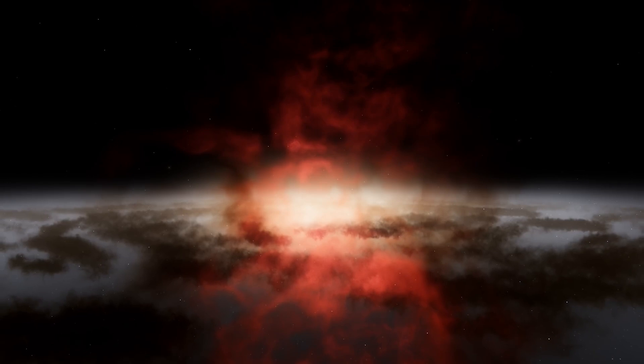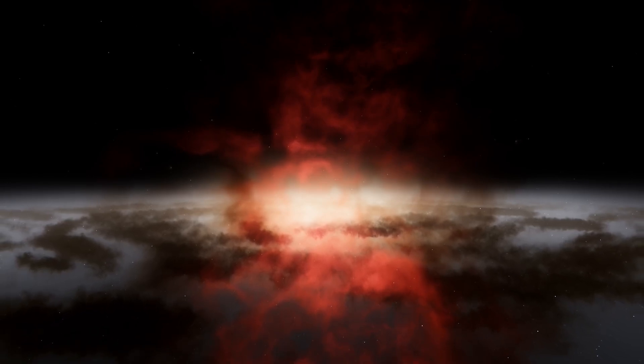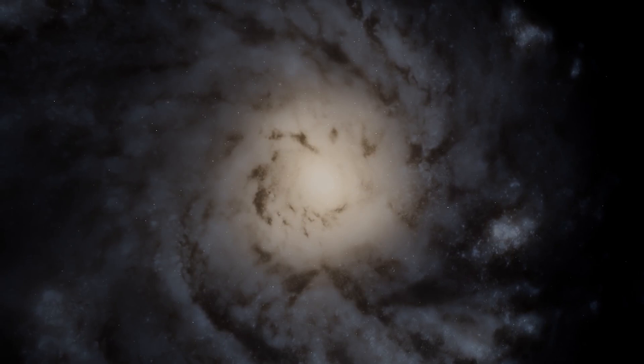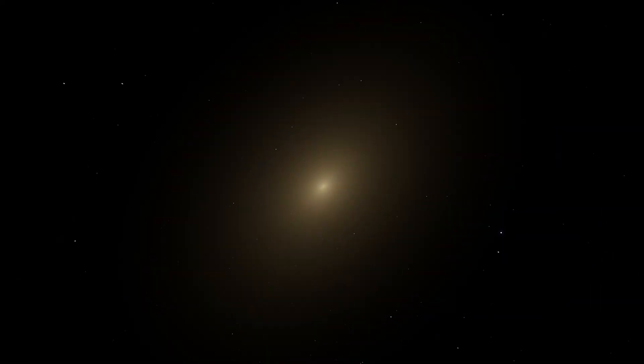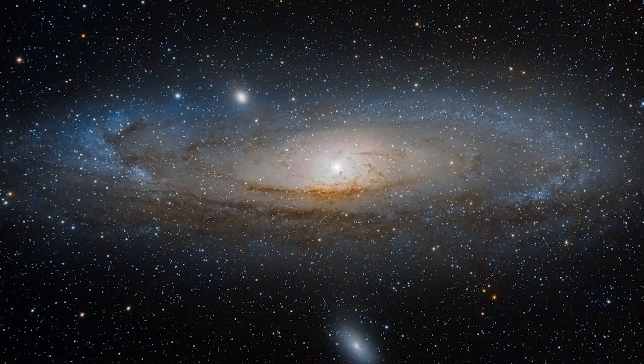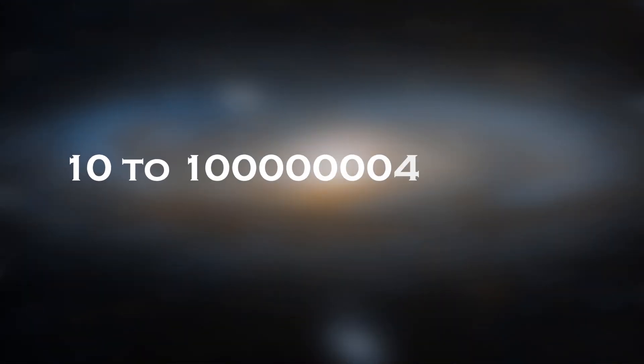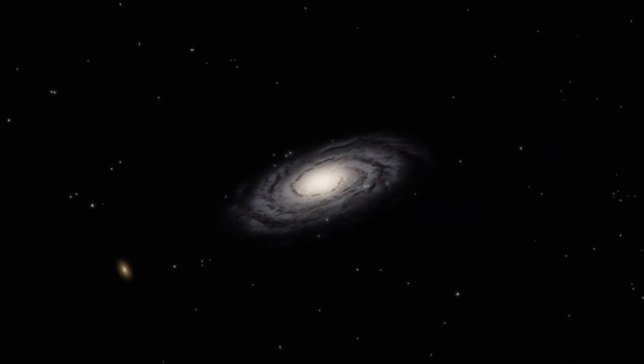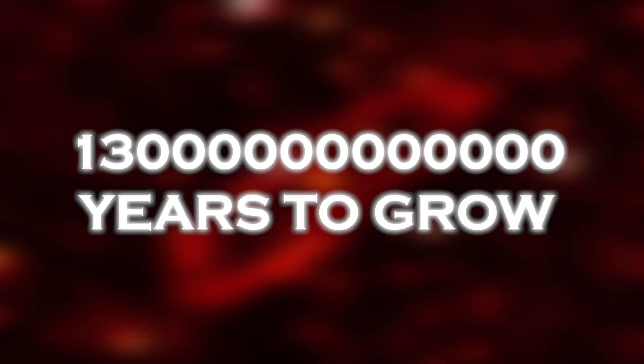Using stellar evolution models, the scientists calculated how many stars each of these galaxies would need to emit all their light. They found that the stellar masses of these six galaxies range from 10 to 100 billion times the mass of our Sun. This is comparable to or even greater than the mass of our own Milky Way galaxy, which contains approximately 60 billion stars and has had more than 13 billion years to grow.